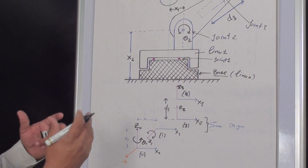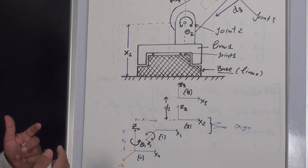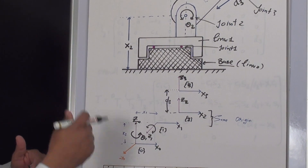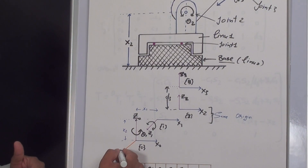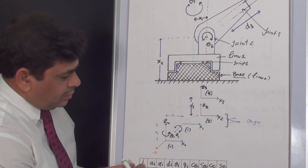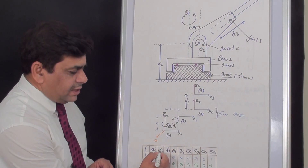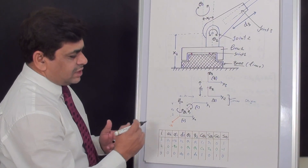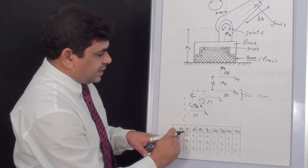After forming the frames, we need to find all the DH parameters to determine the relationship between the ith frame and the i minus one frame. We also assign the y-axis orthogonally. The important parameters are: ai, di, alpha i, and theta i. We already know that ai is the link length — the distance measured about the x-axis from the point of intersection of the ith frame to the i minus one frame.